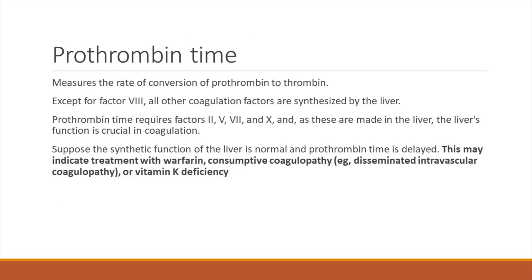Coming to the prothrombin time — it is the measurement of conversion of prothrombin to thrombin. It is the easiest way to measure coagulation factors on a day-to-day basis in labs, which is almost available everywhere. Except for factor VIII, all the coagulation factors are synthesized by the liver. Prothrombin time requires factors II, V, VII, and X, and as these are made in the liver, liver function is crucial in coagulation.